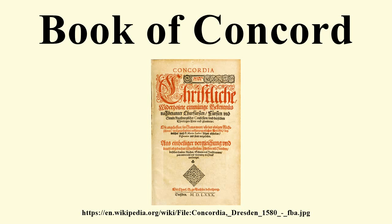English translations of individual documents of the Book of Concord, notably the Augsburg Confession, were available since the 16th century. The first complete English translation was the 1851 Henkel edition, followed by a second edition in 1854. These volumes included historical introductions. Henry E. Jacobs and others published the next English version in 1882, with a revised People's Edition in 1911. The 1882 edition was accompanied by a companion volume containing historical introductions and English translations of other documents illustrative of the history of the Book of Concord.